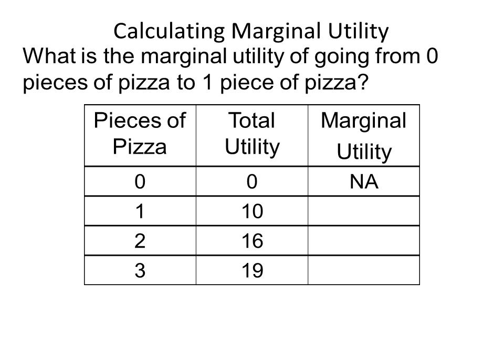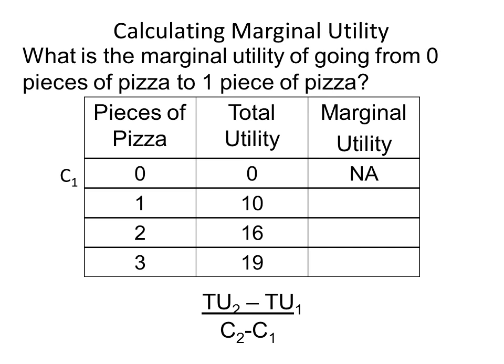What is the marginal utility of going from zero pieces of pizza to one piece of pizza? Notice that the marginal utility at zero pieces of pizza is listed as N/A, because we don't have another value to calculate the difference in utility and the difference in consumption. The first step is to designate zero pieces of pizza as C1, since that is our starting point, making its associated utility TU1, which equals zero.